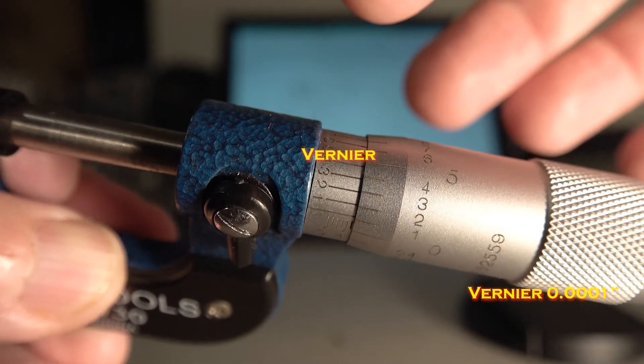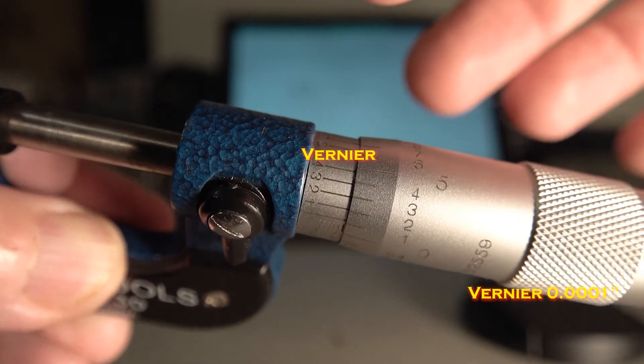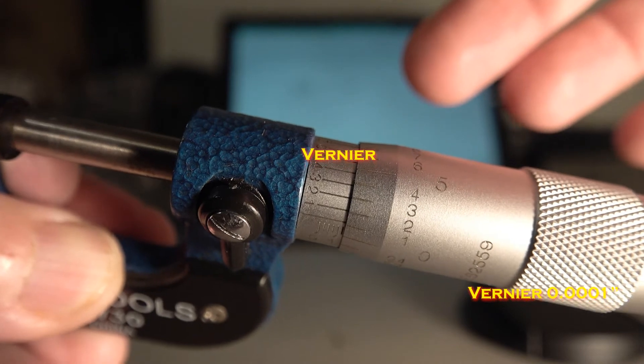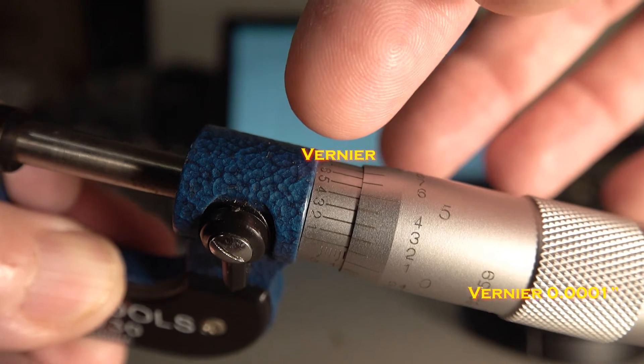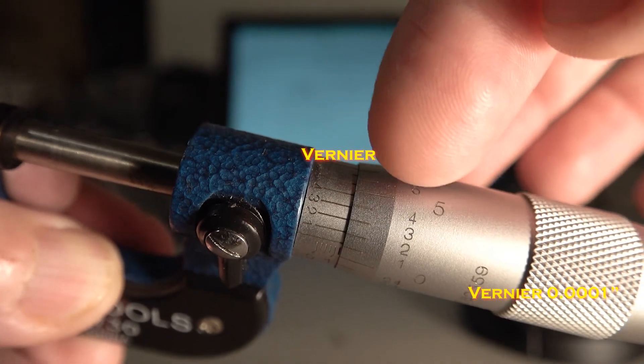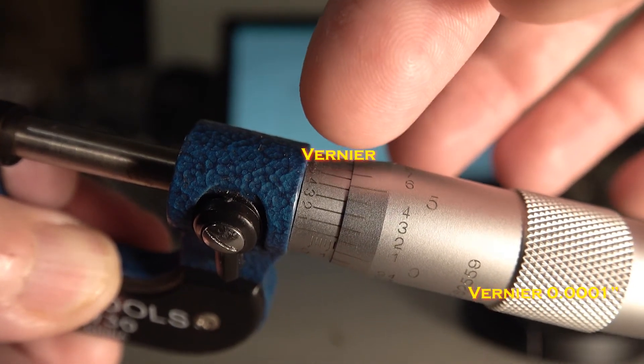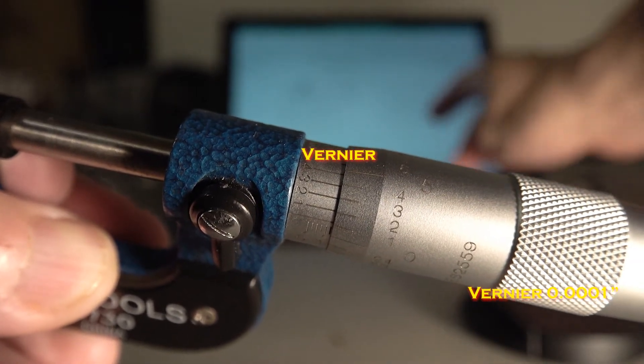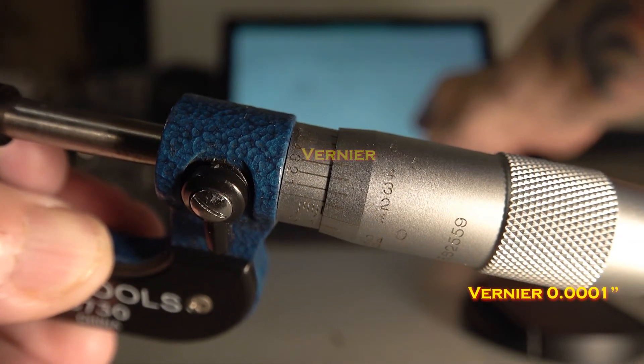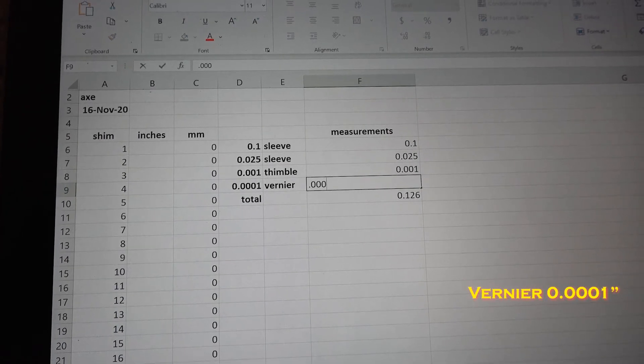So what you want to do is pick the one that it's most matched to, and if you look across there, it looks like the 2 on the vernier, which is on the left, is the one that lines up closest with a line on the thimble. So that 2 is another two ten thousandths. So we're going to enter 0.0002 into the spreadsheet.